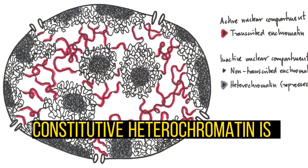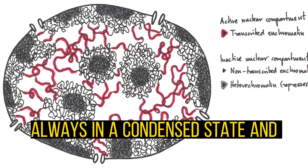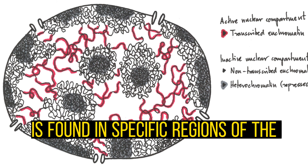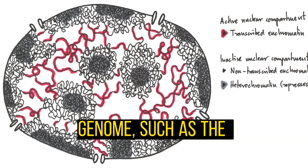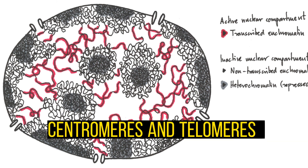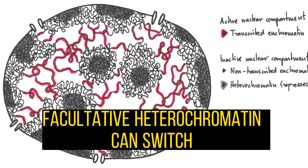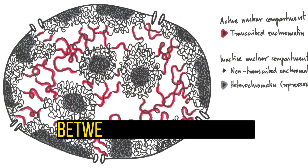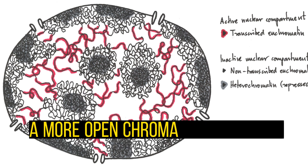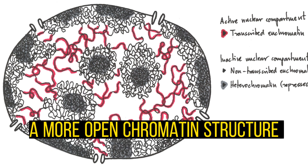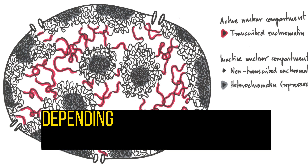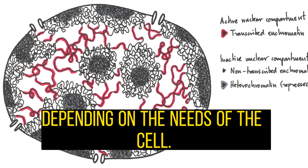Constitutive heterochromatin is always in a condensed state and is found in specific regions of the genome, such as the centromeres and telomeres. Facultative heterochromatin can switch between a condensed and a more open chromatin structure depending on the needs of the cell.